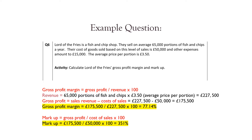Now, in order to work out the markup, we do gross profit divided by cost of sales times by 100. As worked out before, the gross profit is £175,500 divided by £50,000 times that by 100, which means the markup in this question is 351%.